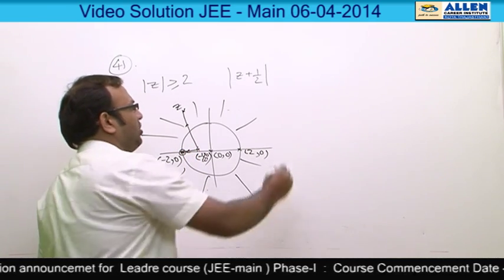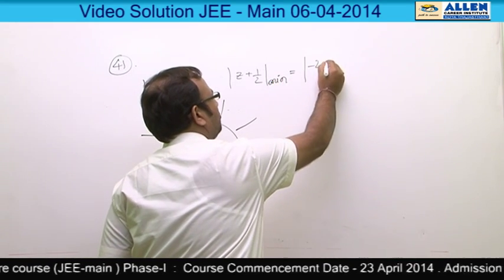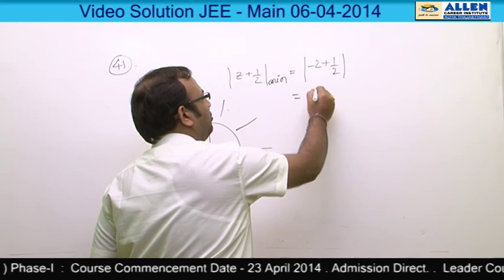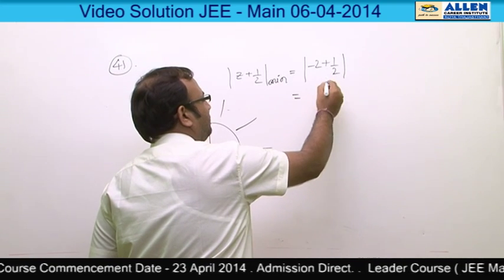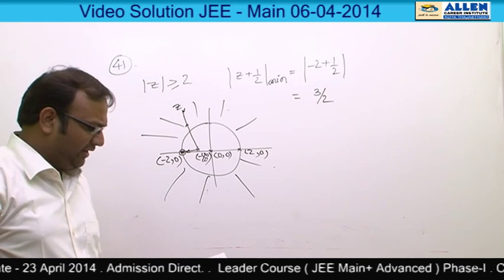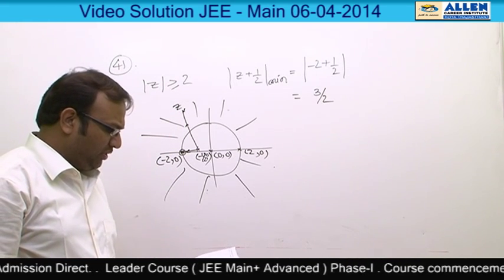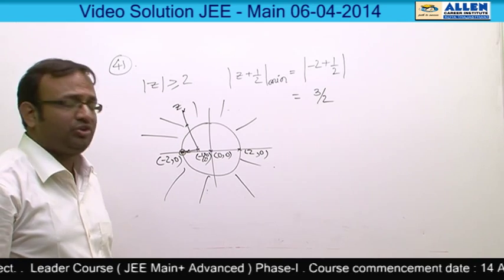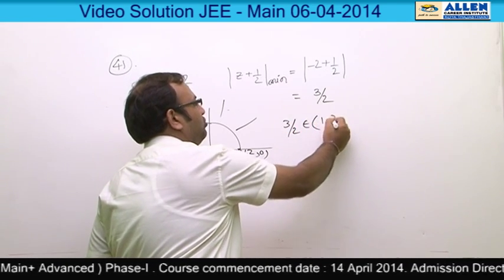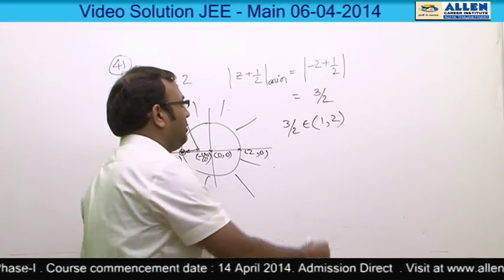Therefore, the minimum value of |z + 1/2| is equal to |-2 + 1/2| which equals 3/2. Looking at the options, option number 2 is the most appropriate because 3/2 belongs to the open interval (1, 2). So the correct option is option number 2.